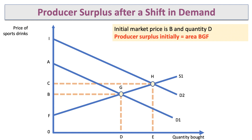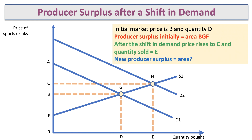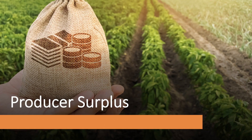Initially the producer surplus was BGF. After the shift in demand, the price goes up to C and the quantity increases to E. The new producer surplus is area CHF. The producer has benefited — their total revenue has gone up because of selling more at a higher price, and therefore there is an increase in producer surplus.